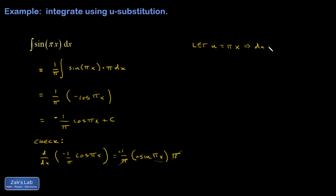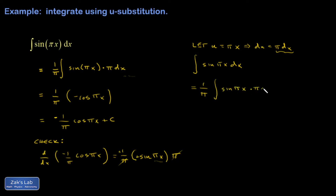That means du is pi dx. I'll go back and look at my integral. I have sine of pi x dx. I need this to occur in the integral, so I'm going to multiply by pi on the interior and then divide by it on the exterior. Notice it's something we really already did when we took the informal approach. So I have sine pi x times pi dx. Now I can transform in terms of u. So u is just pi x, so I have sine u. Pi dx — that's just du. And that was the whole point of the substitution: to cook the integral into a form where we could just guess the antiderivative.